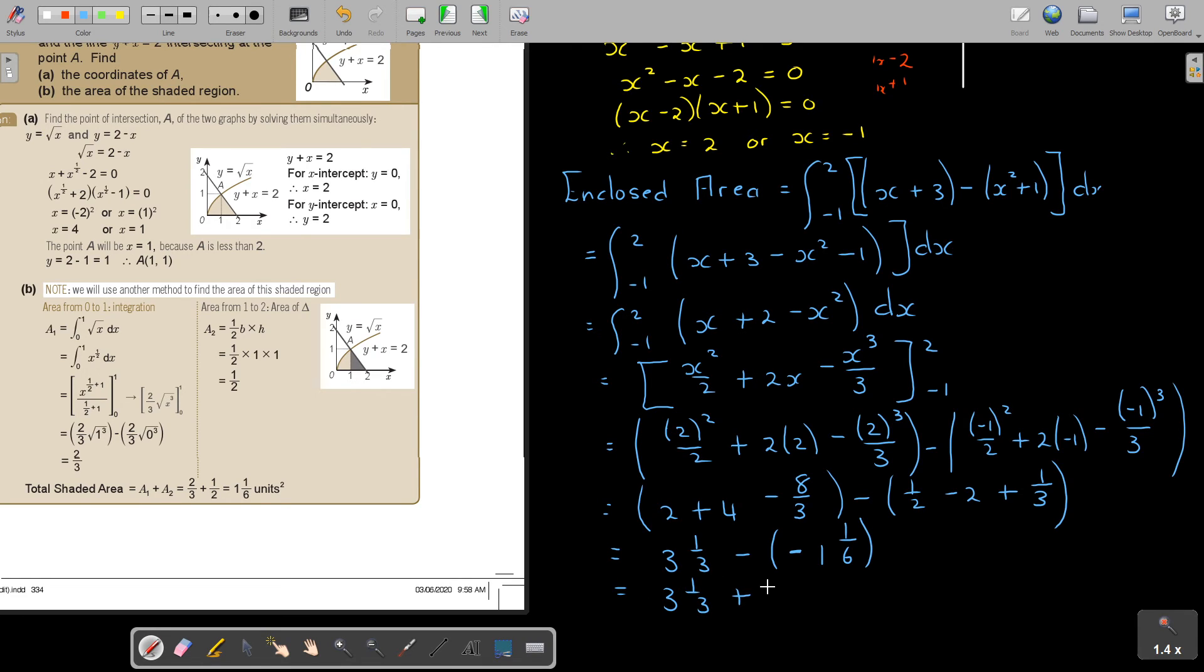Positive. Negative times negative. So, plus 3 and 1 third equals. And that will give me exactly 4. Oh, my pen. 4 and a half units squared. And that will be my final answer.